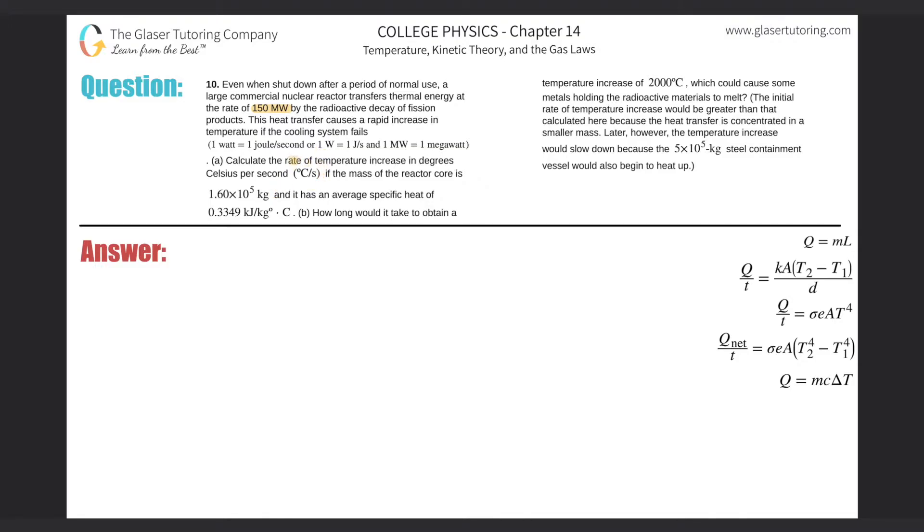Letter A. Calculate the rate of temperature increase in degrees Celsius per second if the mass of the reactor core is 1.6 times 10 to the 5 kilograms, and it has an average specific heat of 0.3349 kilojoules per kilogram Celsius.